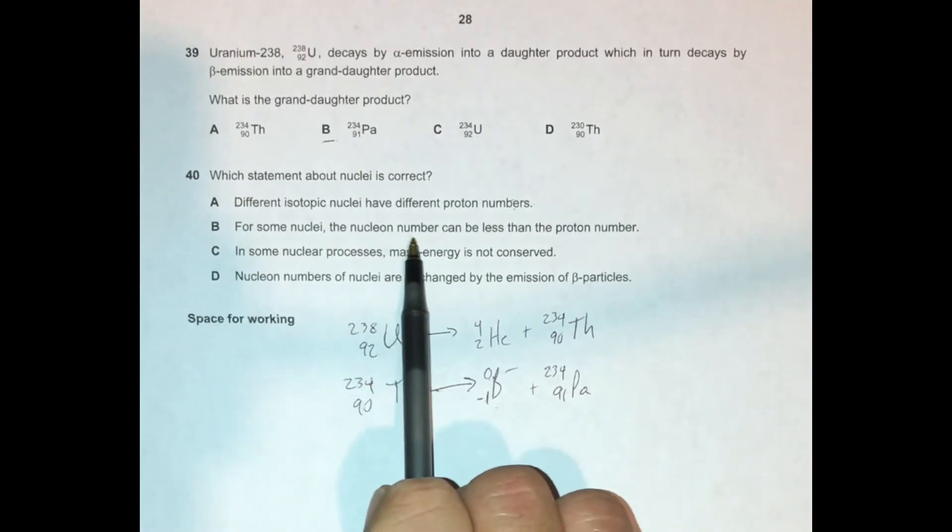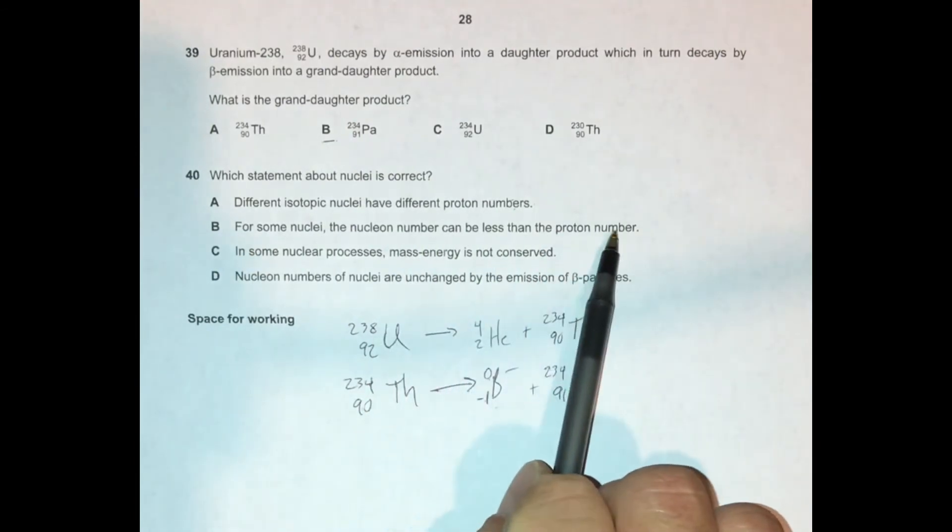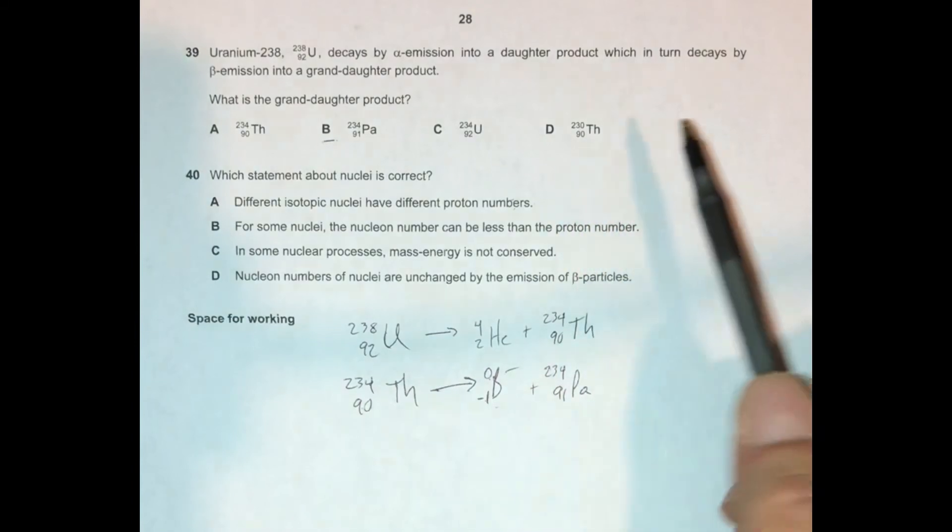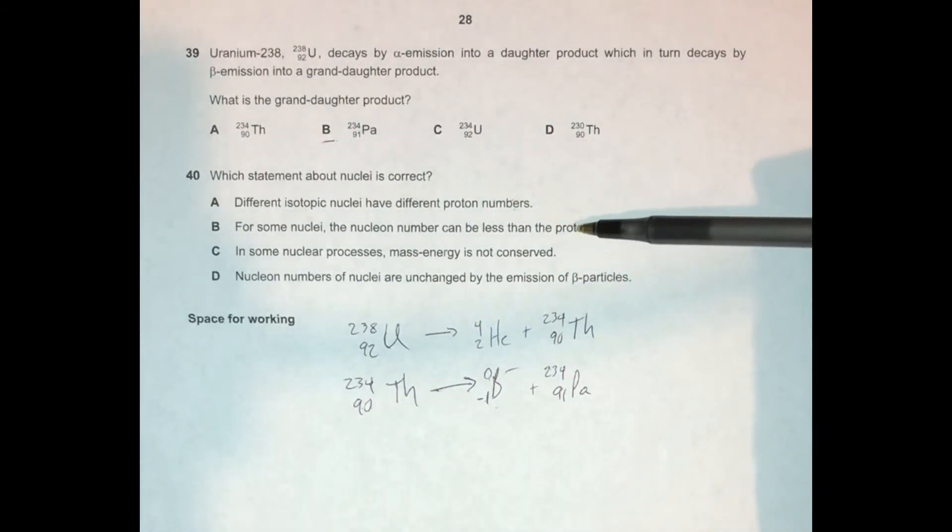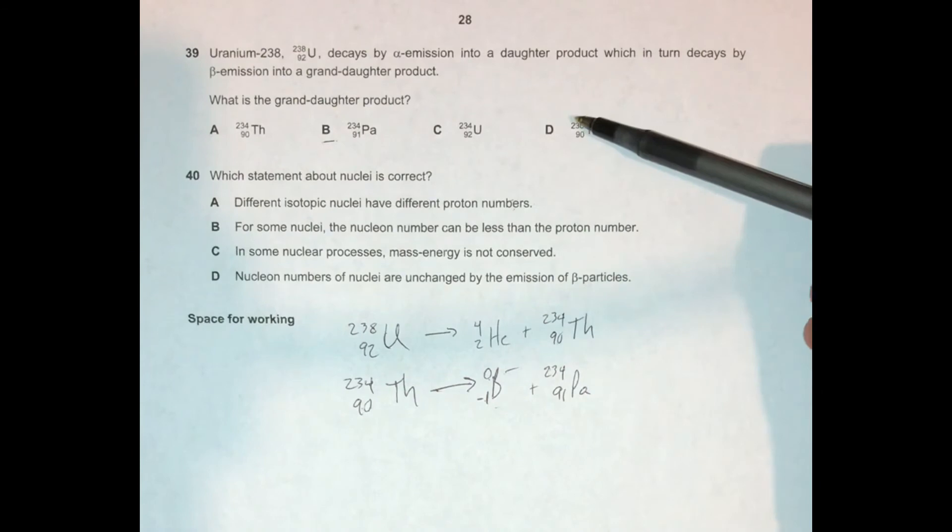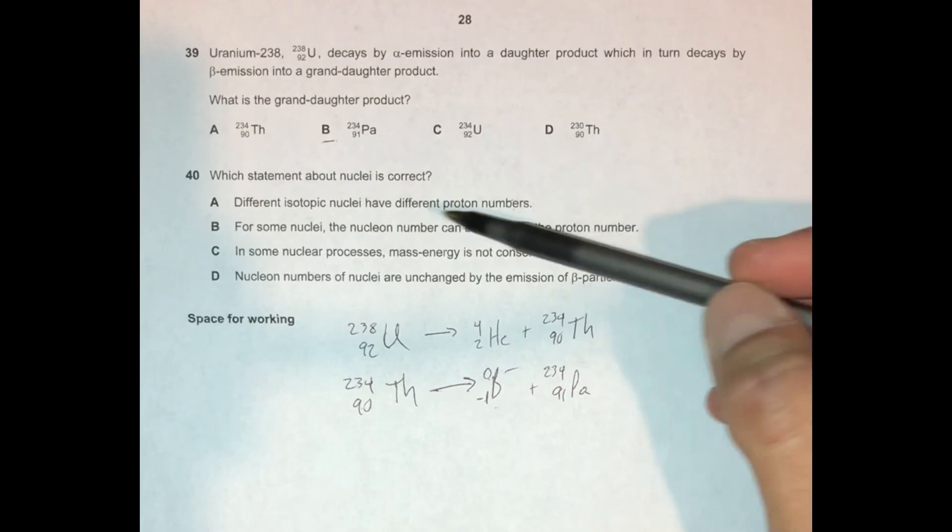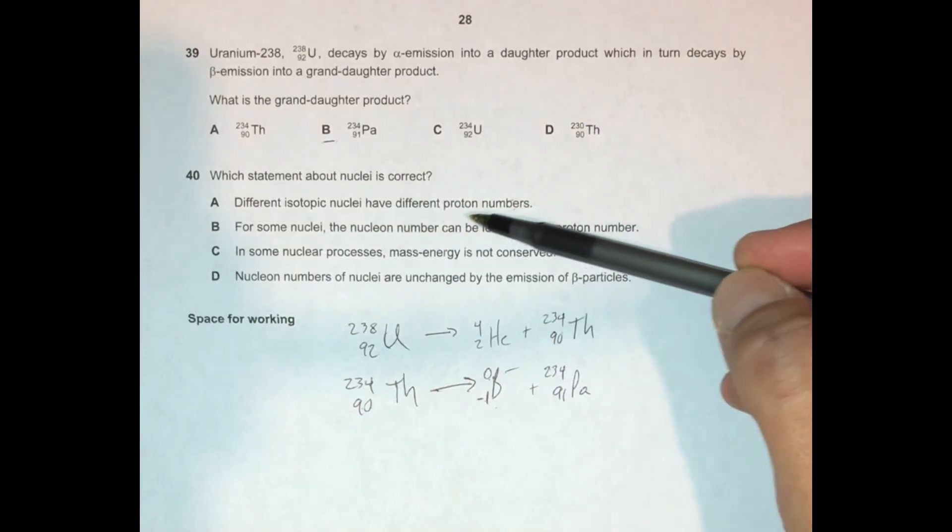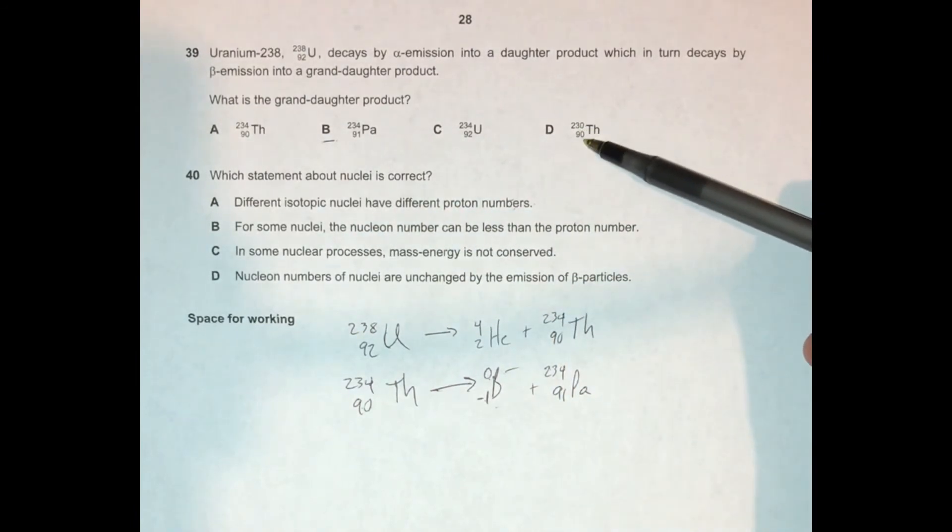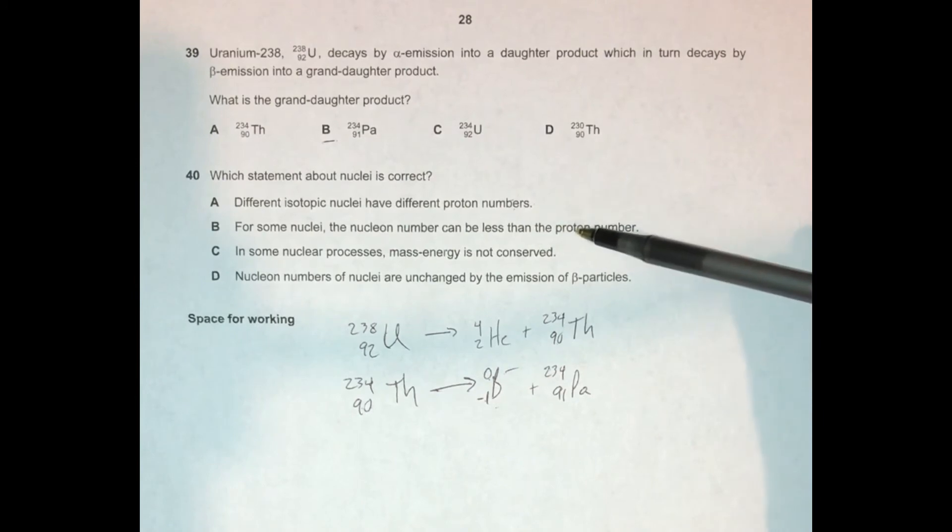For some nuclei, the nucleon number can be less than the proton number. Well, that's not correct. You might notice whenever you look at a nuclide symbol that the top number is always larger than the bottom number. And that's because it includes all of these protons, because protons are nucleons. It's all the nucleons, the neutrons plus protons. And so for some nucleons, the nucleon number can be less than the proton number - no, it just doesn't even make sense. Protons are nucleons. And so how could the nucleon number be less than that?